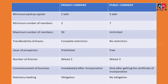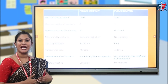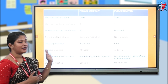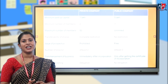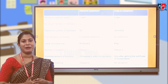Regarding commencement of business: in the case of a private company, business commences immediately after incorporation. In the case of a public company, it commences only after obtaining the certificate of commencement. The next factor is statutory meeting: in the case of a public company it is an obligation to conduct a statutory meeting, but in the case of a private company there is no such obligation. These are the factors that differentiate a public company from a private company. I hope everyone understands the difference between private and public company. Thank you.